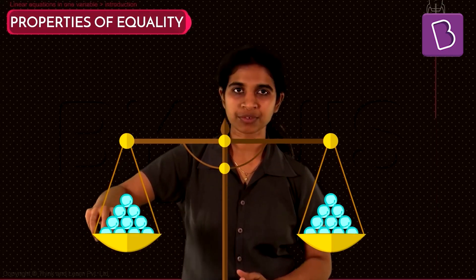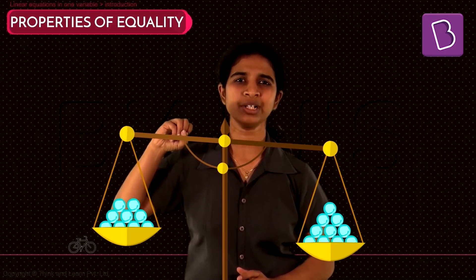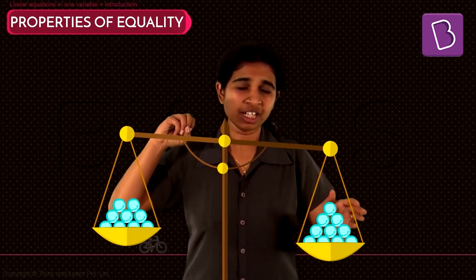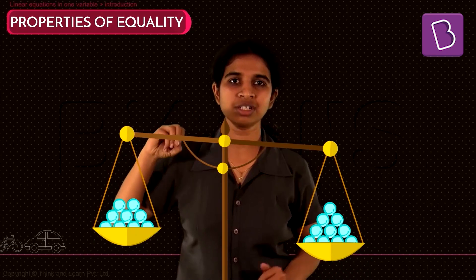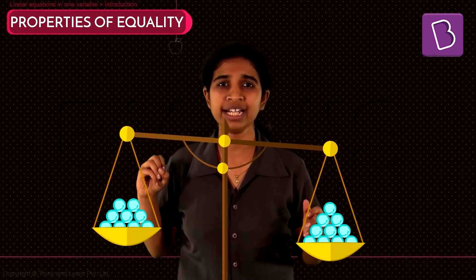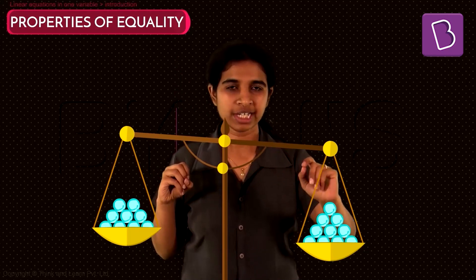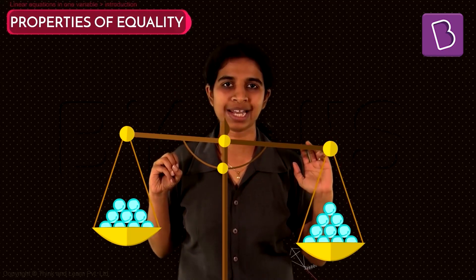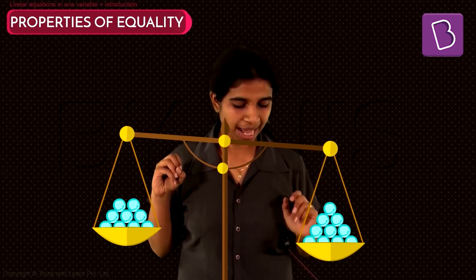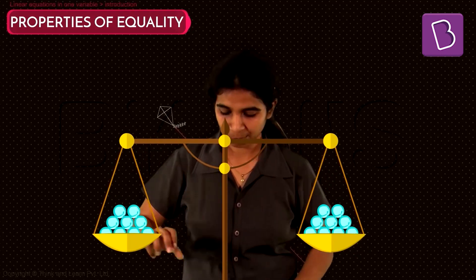Now, if I remove a pebble from this pan, what is going to happen? The weight on this side is higher, so this side is going to start tilting down. Something is going wrong. The key rule to solving an equation is that it should always be perfectly balanced. So I'll remove one stone from this pan as well — and it's perfectly balanced again.